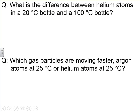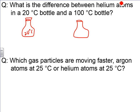We can ask a question like: what's the difference between helium atoms in a 20°C bottle and in a 100°C bottle? If you have two closed bottles, each containing helium atoms — one at 20°C and one at 100°C — the 100°C bottle has more kinetic energy. Because we have more kinetic energy, the particles are moving faster on average. You can actually determine how much faster using this equation, and we'll calculate that later on.